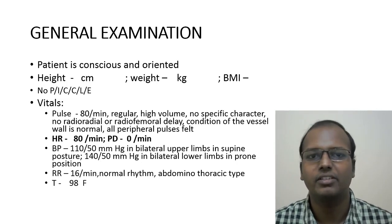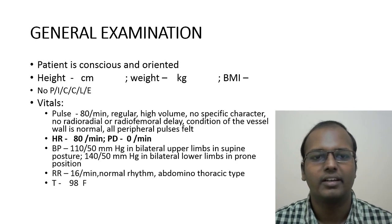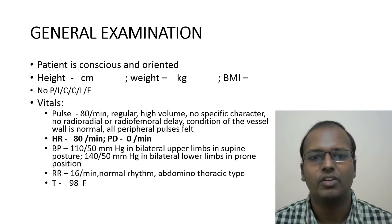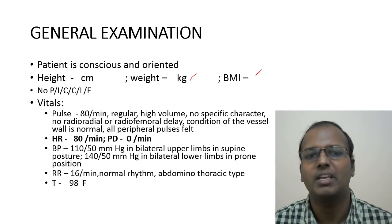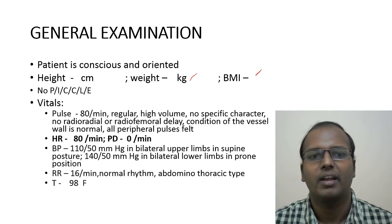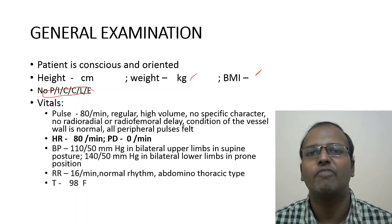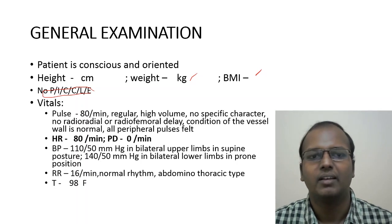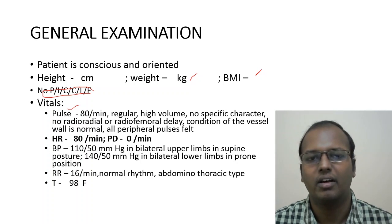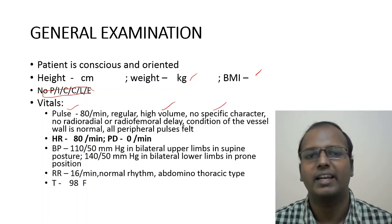Coming to general examination: the patient is conscious and oriented. You have to measure height in centimeters, weight, and then BMI. You also need to describe pallor, cyanosis, clubbing, lymphadenopathy, and pedal edema. For vitals, you have to mention the pulse — for example, 80 per minute, regular, high volume — and note any specific character and radio-radial or radio-femoral delay.